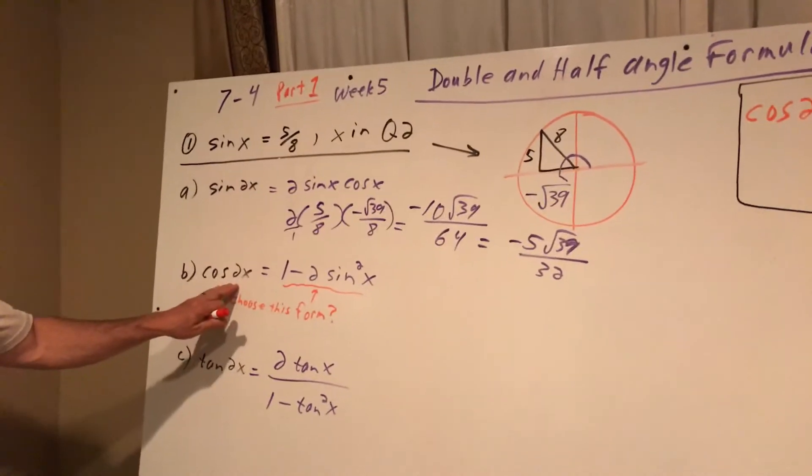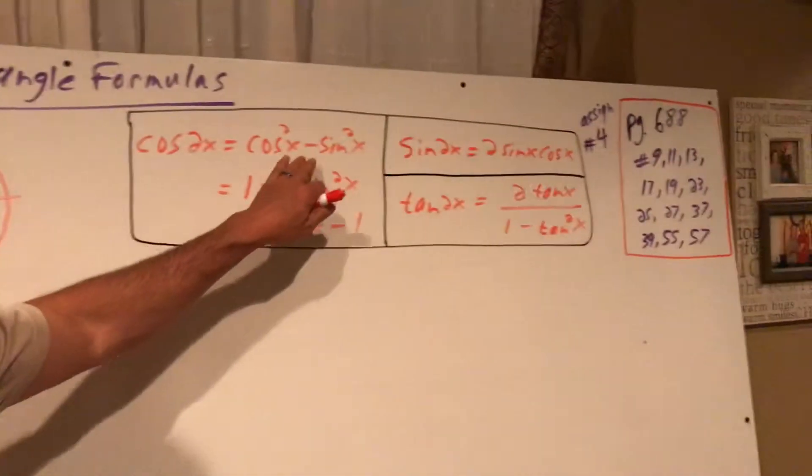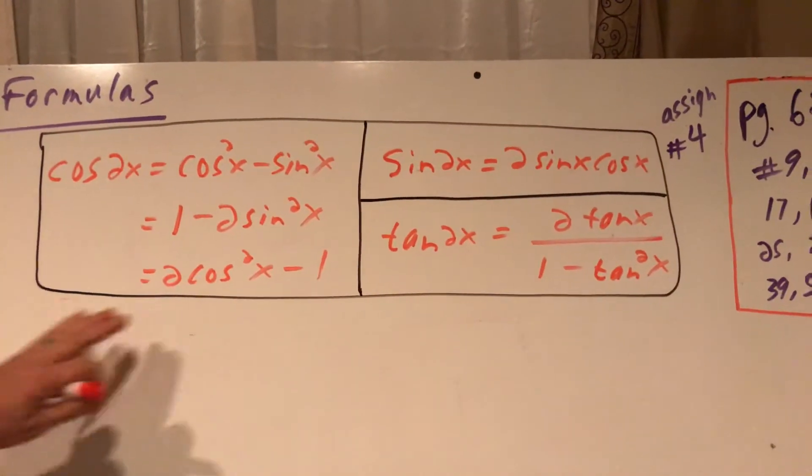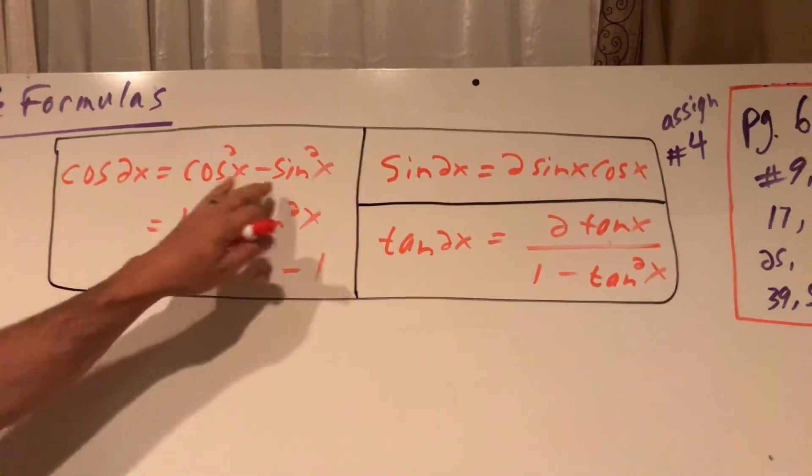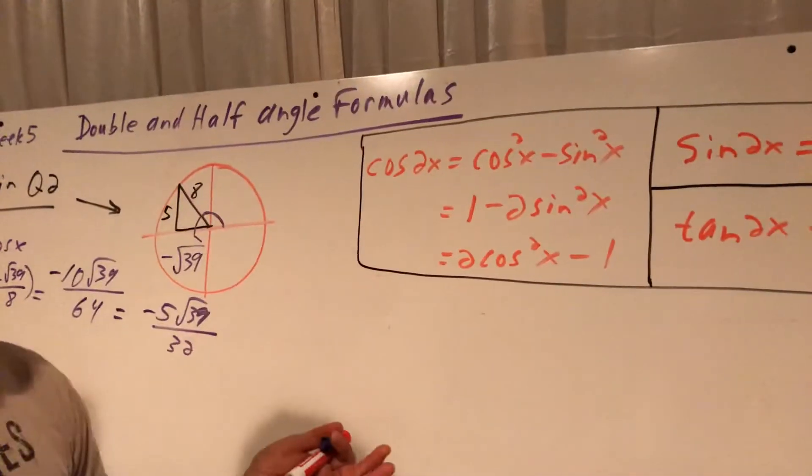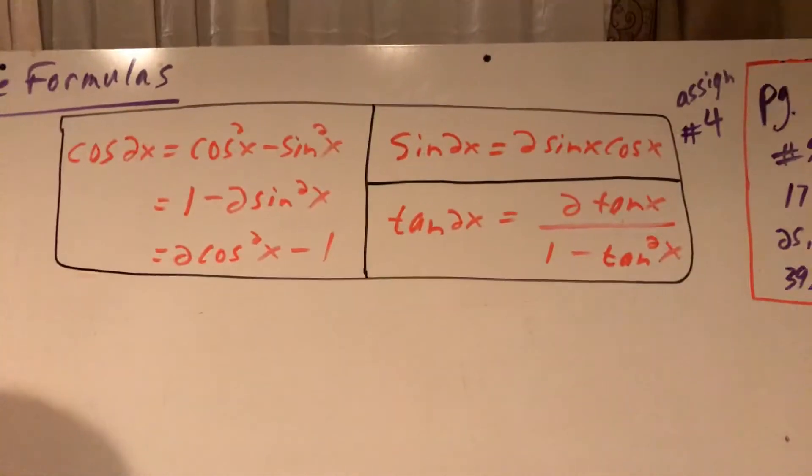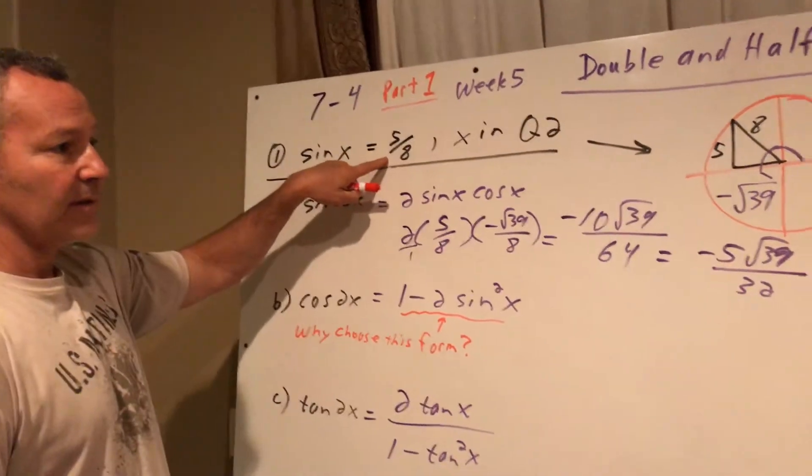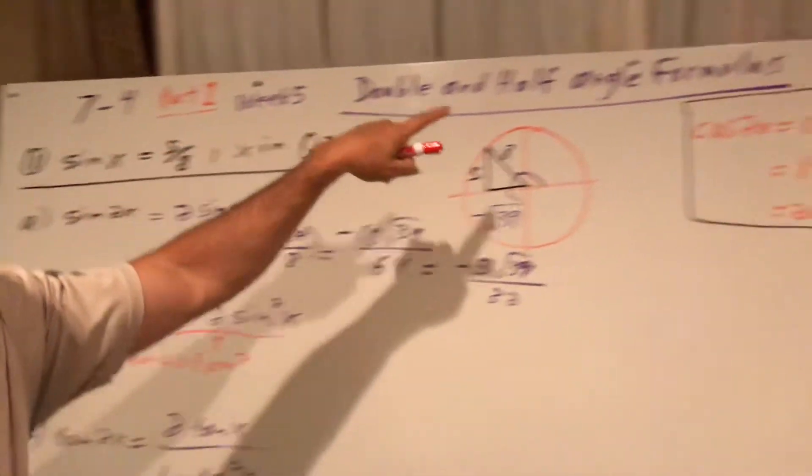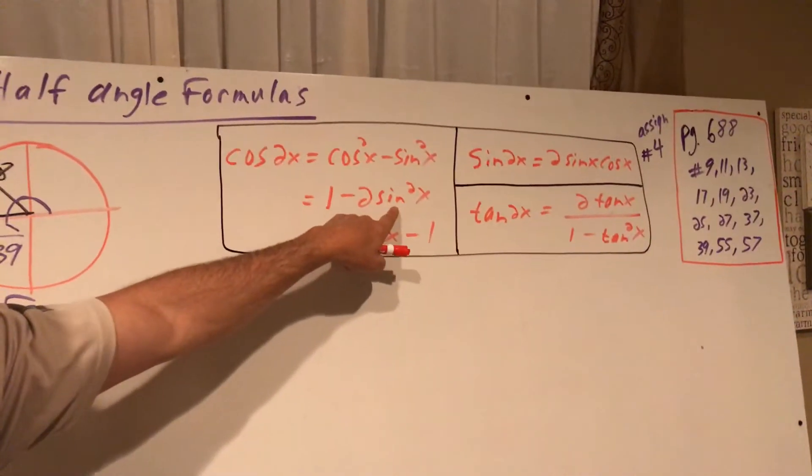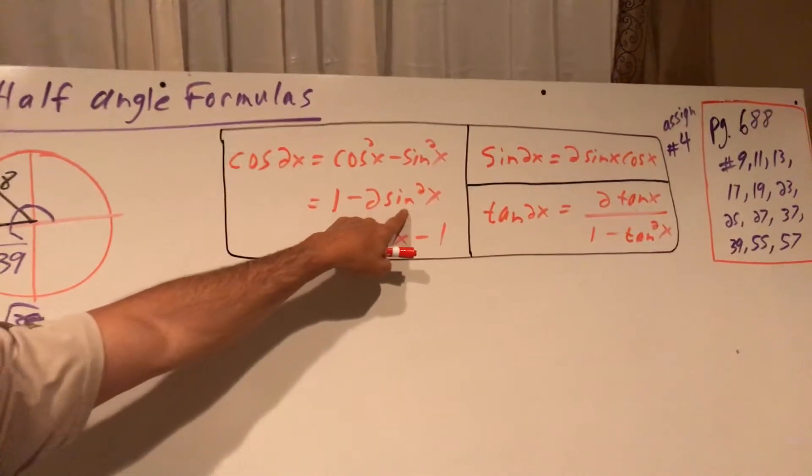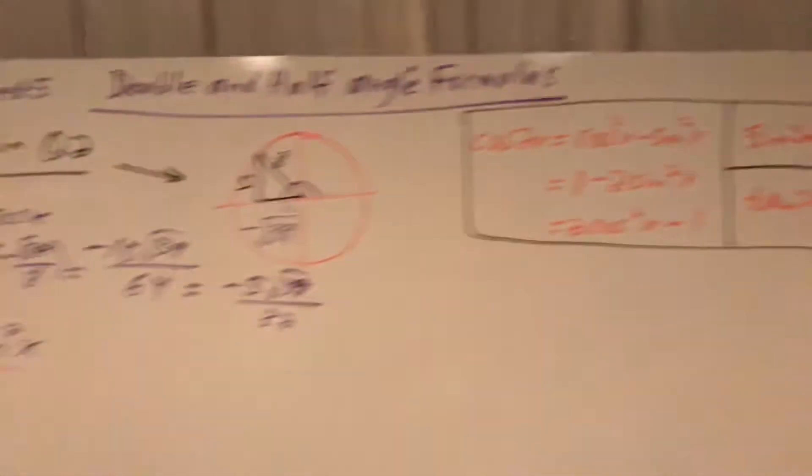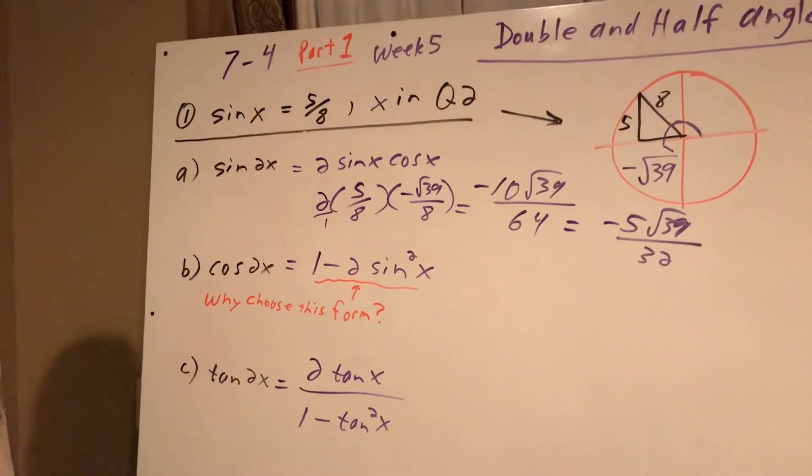Okay, cosine of 2x. I have three different versions here. Since I've done my triangle, some use cosine, some use sine. This one uses both. I have both values, so I could use any of those I want. My answers would look different, but I'll be equivalent. Since they gave me sine of x already, I went ahead and chose this one with the sine. If I didn't have my circle, I would want to do that rather than going to do the extra work. They've given me sine, I can just plug it in right there. So that's why I chose this particular one.